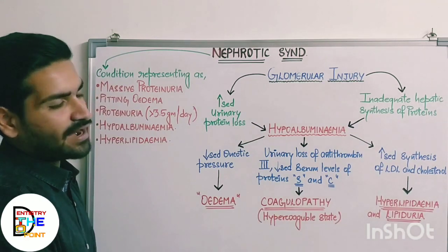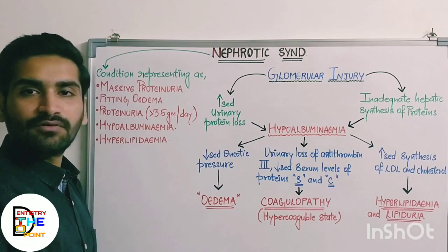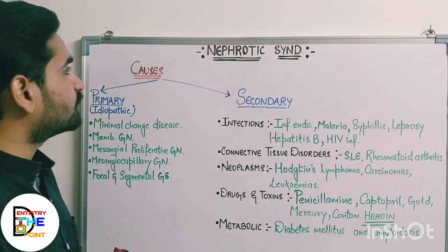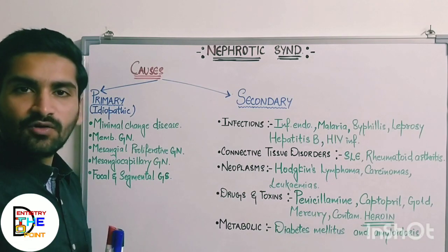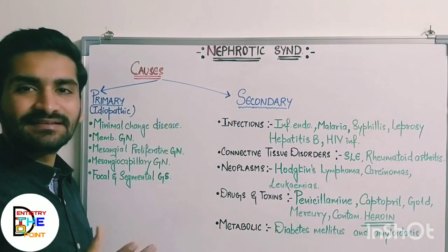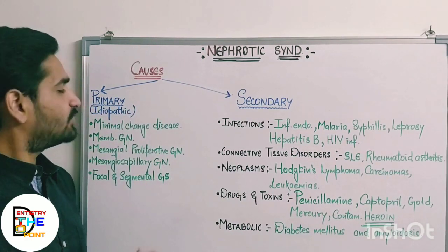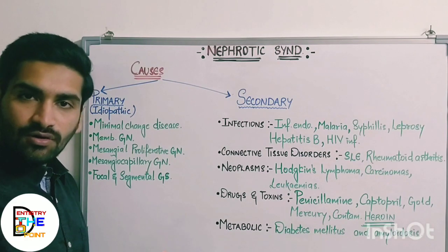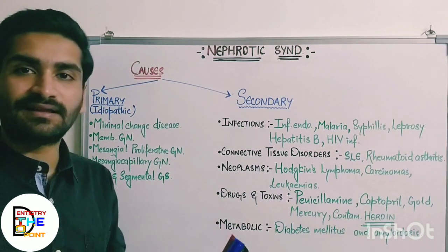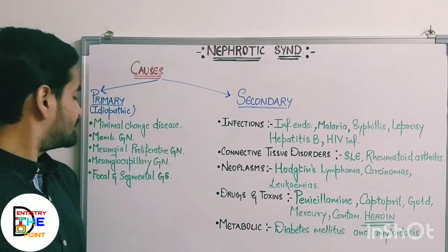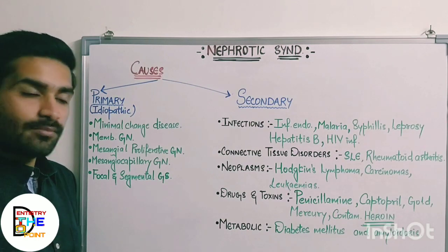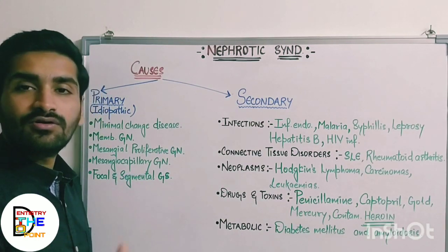Next, we will discuss the clinical features, investigations, and management. Moving on to the causes of nephrotic syndrome, we have divided them into two categories: primary and secondary. In the primary causes, we have idiopathic causes of unknown origin, including: minimal change disease, membranous glomerulonephritis, mesangial proliferative glomerulonephritis, mesangiocapillary glomerulonephritis, and focal segmental glomerulosclerosis.